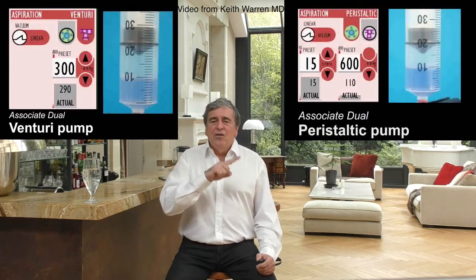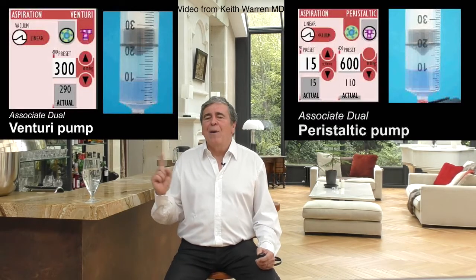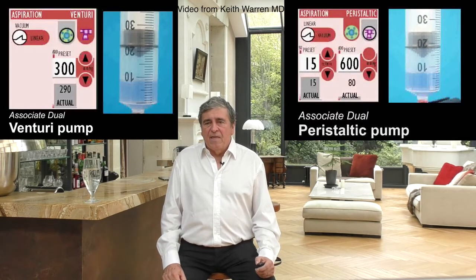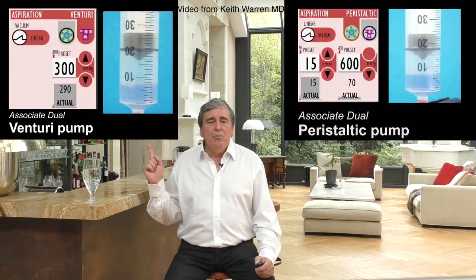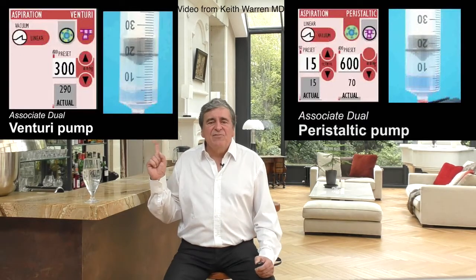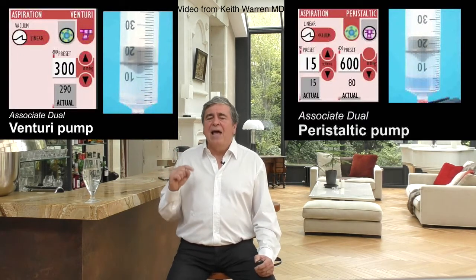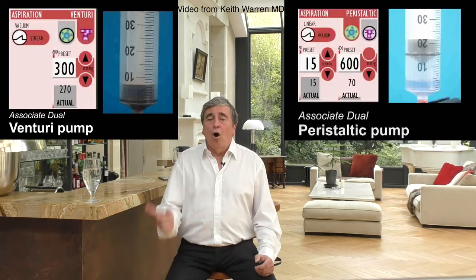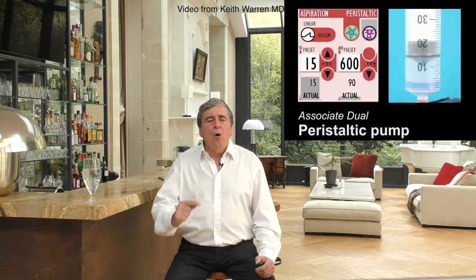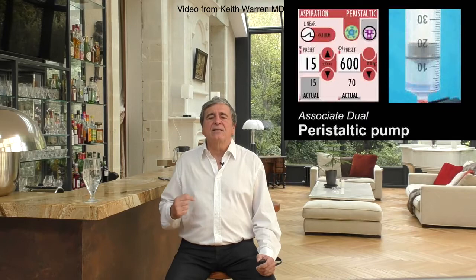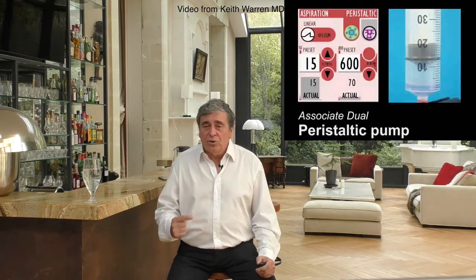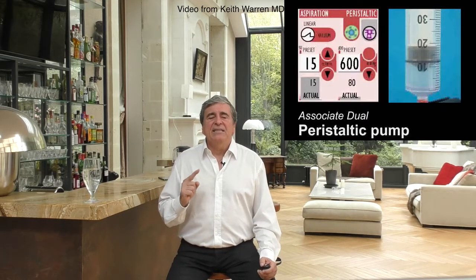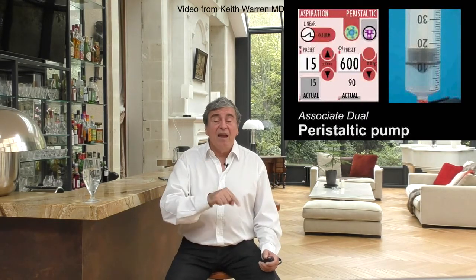The difference in behavior is clearly visible. At the beginning, the two pumps will suck the honey at about the same speed in about 40 seconds. Then, on the left side, when the venturi pump passes through the water, the speed of aspiration accelerates and becomes uncontrollable in the air. On the contrary, on the right, the peristaltic pump will continue to regularly suck at the same speed in the water and even in the air, which explains why it is so precious in fluid-air and especially air-fluid exchange.